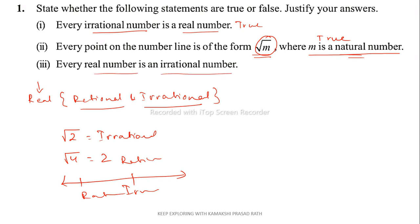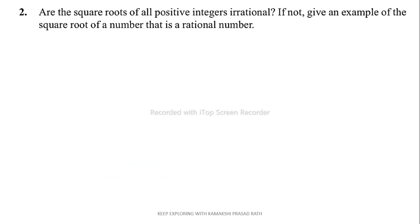The last one: every real number is an irrational number. This statement is false. As we discussed, real numbers consist of both rational and irrational numbers — it is not only irrational numbers. So all real numbers are not irrational; some are rational and some are irrational.